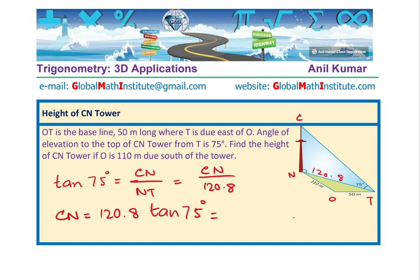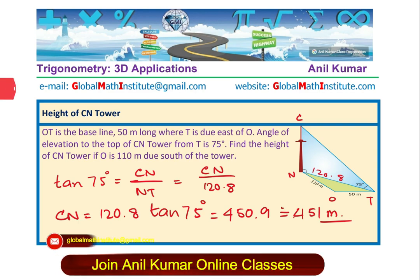I already have this value on my calculator. Multiplying 120.8 by tan(75°) gives approximately 450.9, which we round to 451 meters. So with these calculations, we get a height of 451 meters for CN Tower. That is how we can solve such questions very easily — we just applied basic concepts of trigonometry to find the height of CN Tower.